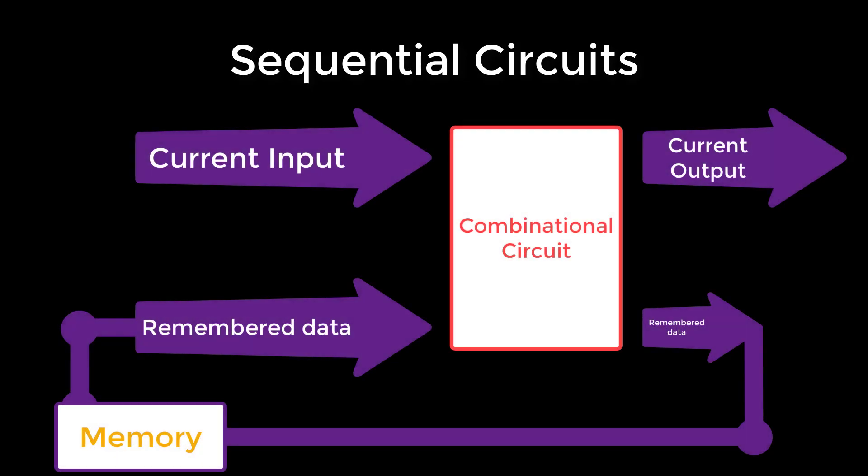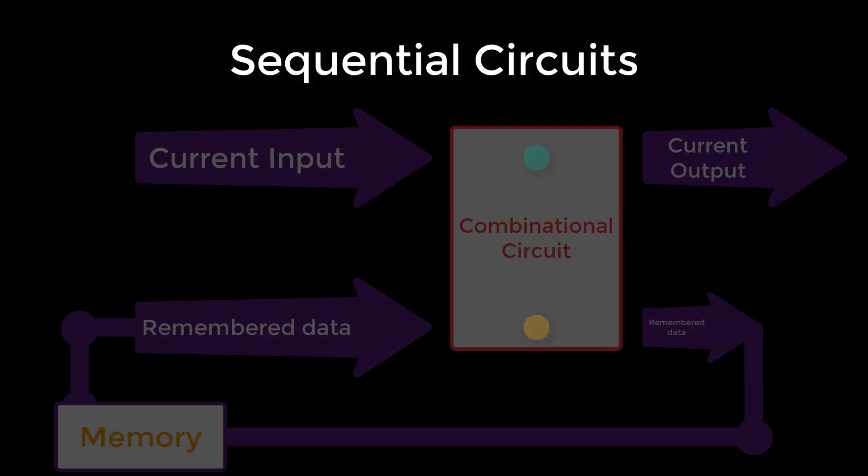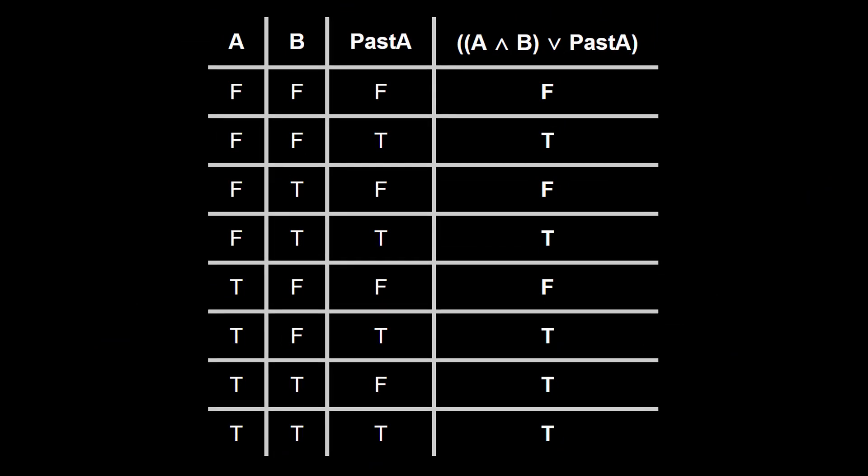Sequential logic enables our circuit to remember one or more of its past inputs. This is a fundamentally different kind of circuit, with one input coming after another. Truth tables for sequential circuits must also account for prior inputs to the system.